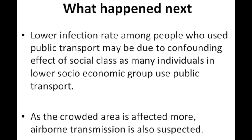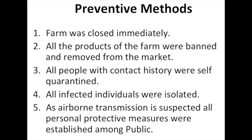The lower infection rate among people who use public transport may be due to the confounding effect of social class, as many individuals in lower socio-economic groups use public transport. Since the crowded area was more affected, airborne transmission is also suspected. The farm was closed immediately, all products were banned and removed from the market, all people with contact history were self-quarantined, and all infected individuals were isolated. Personal protective measures were established among the public.